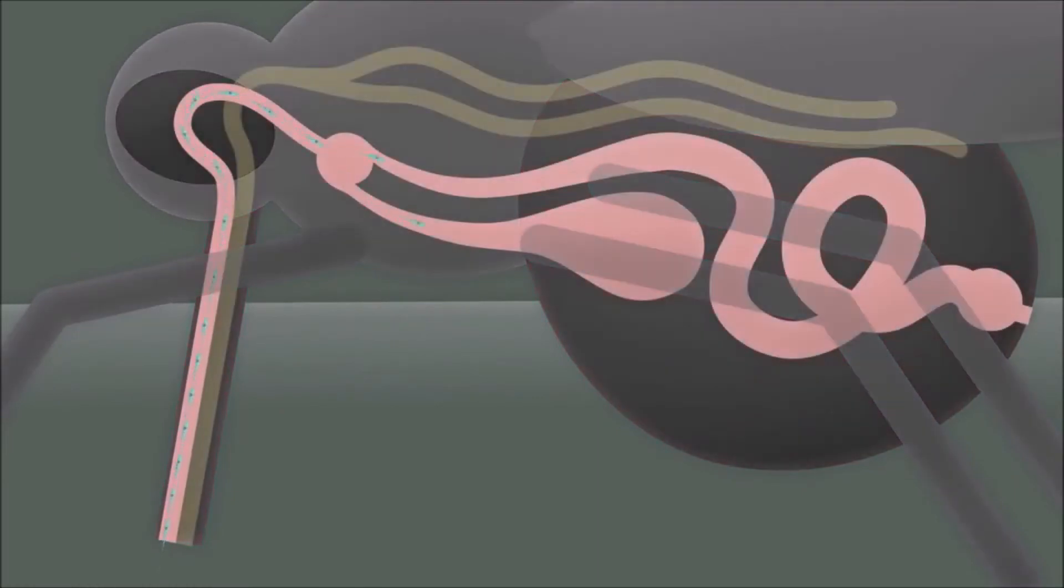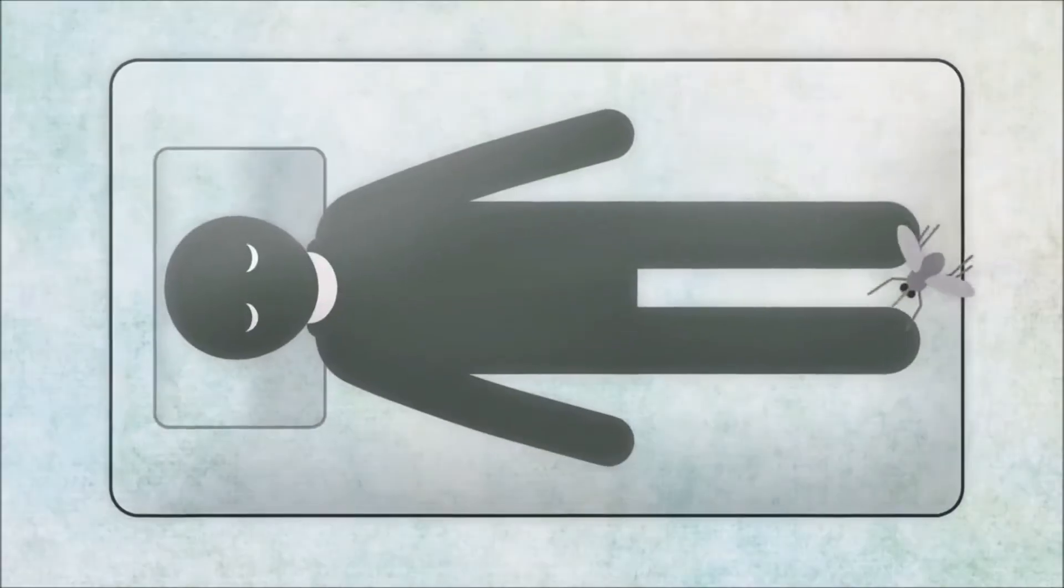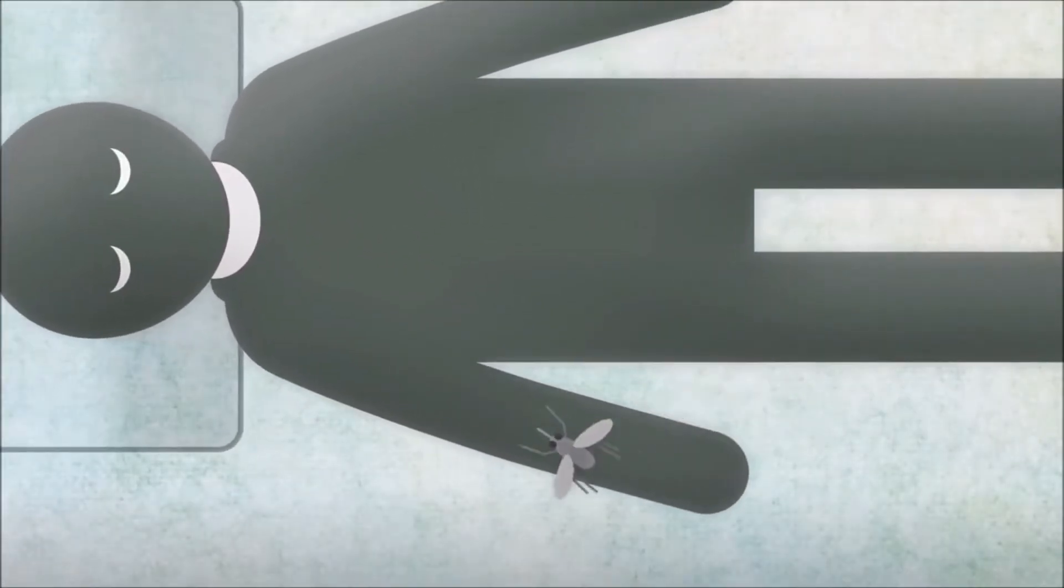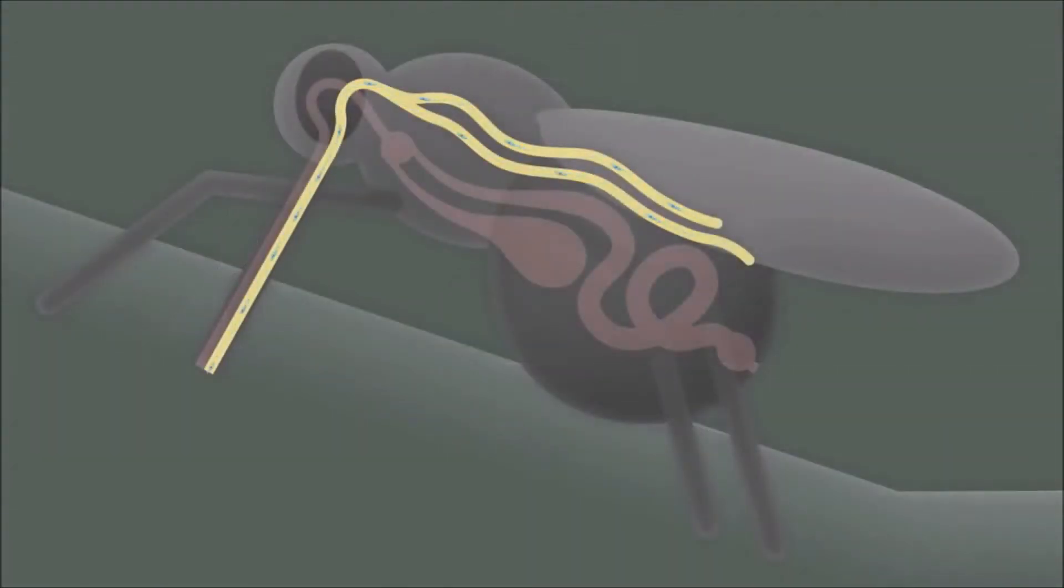These parasites, called trypanosomes, accumulate in the fly's gut. Twenty days later, they migrate to the tsetse fly's salivary glands and are ready to infect another victim when the fly next bites.